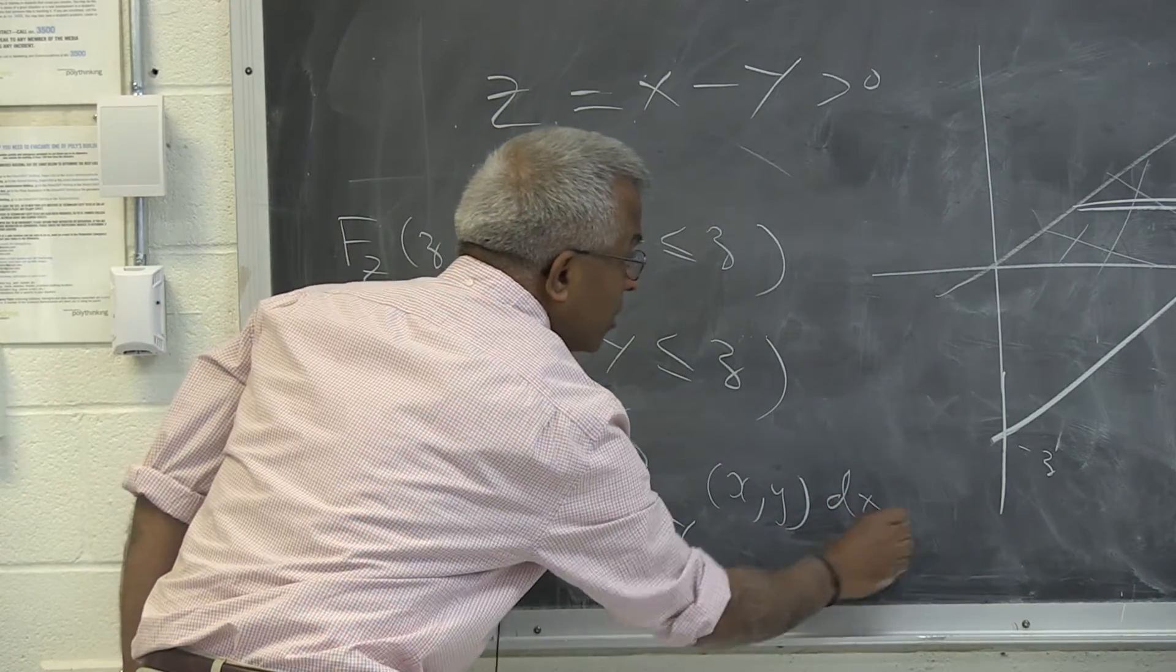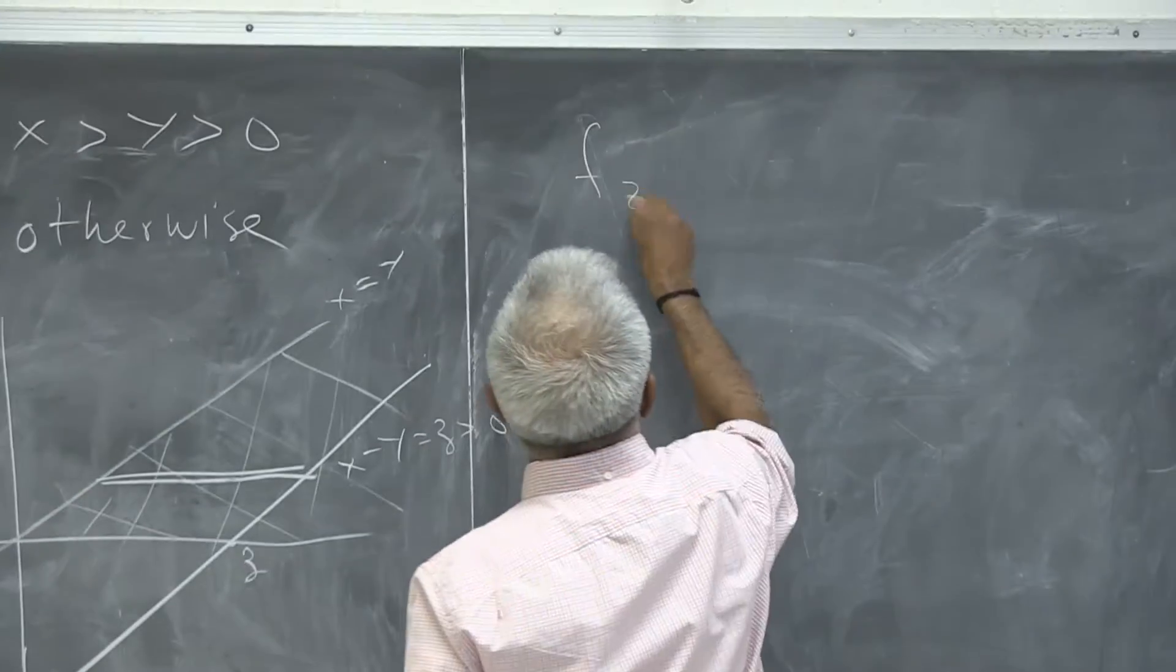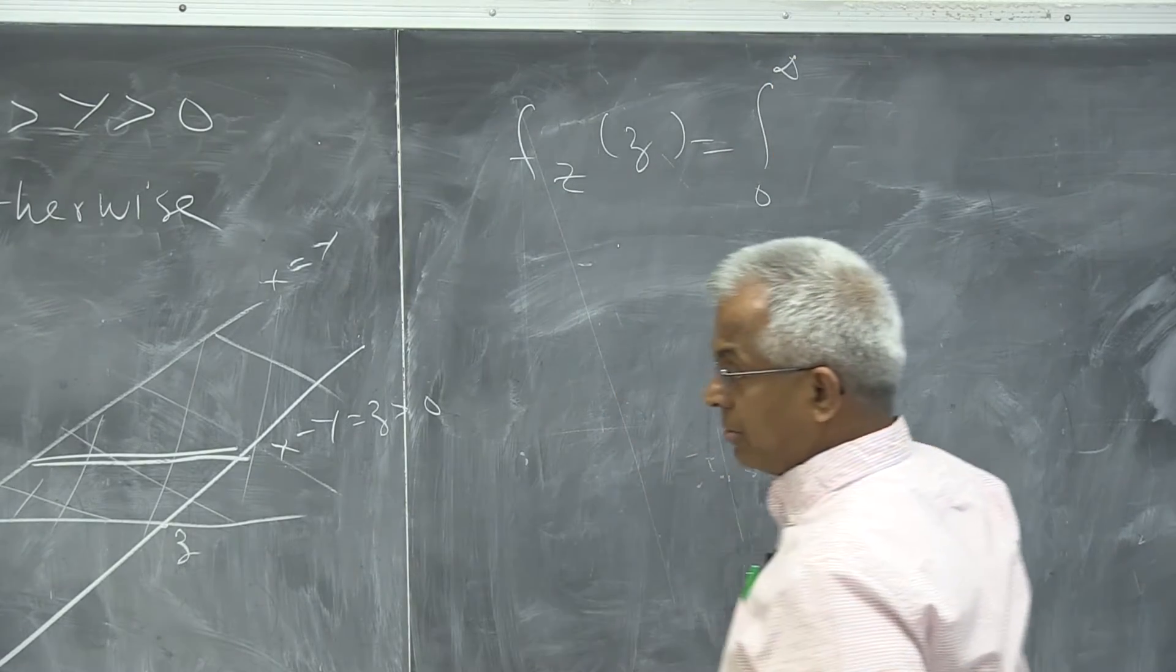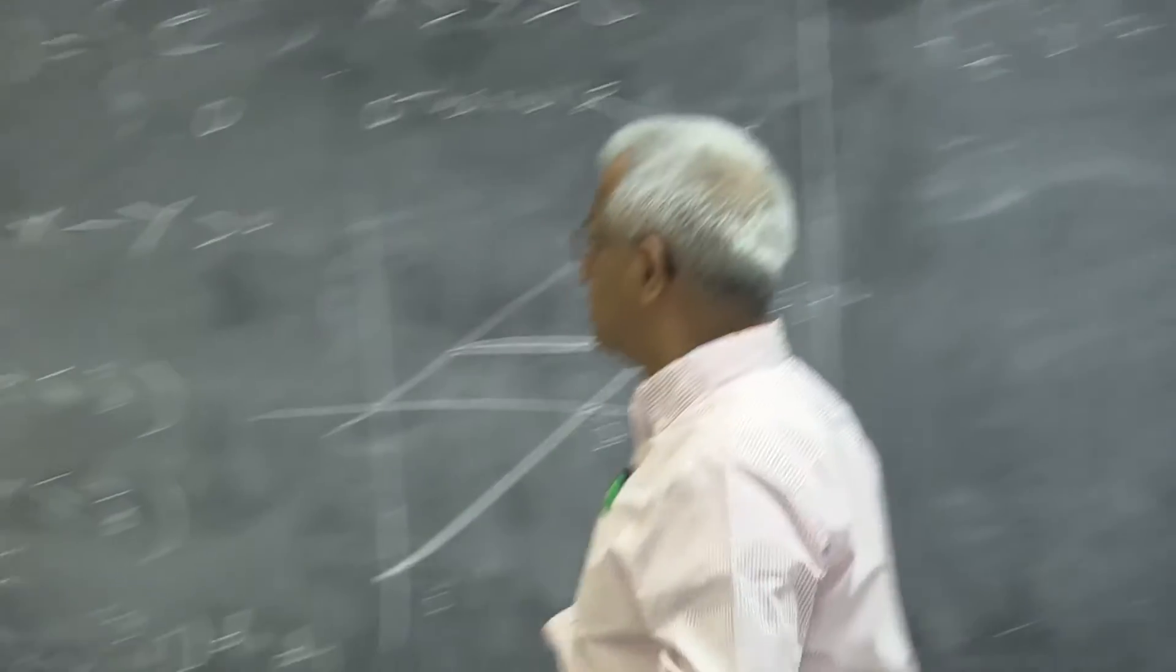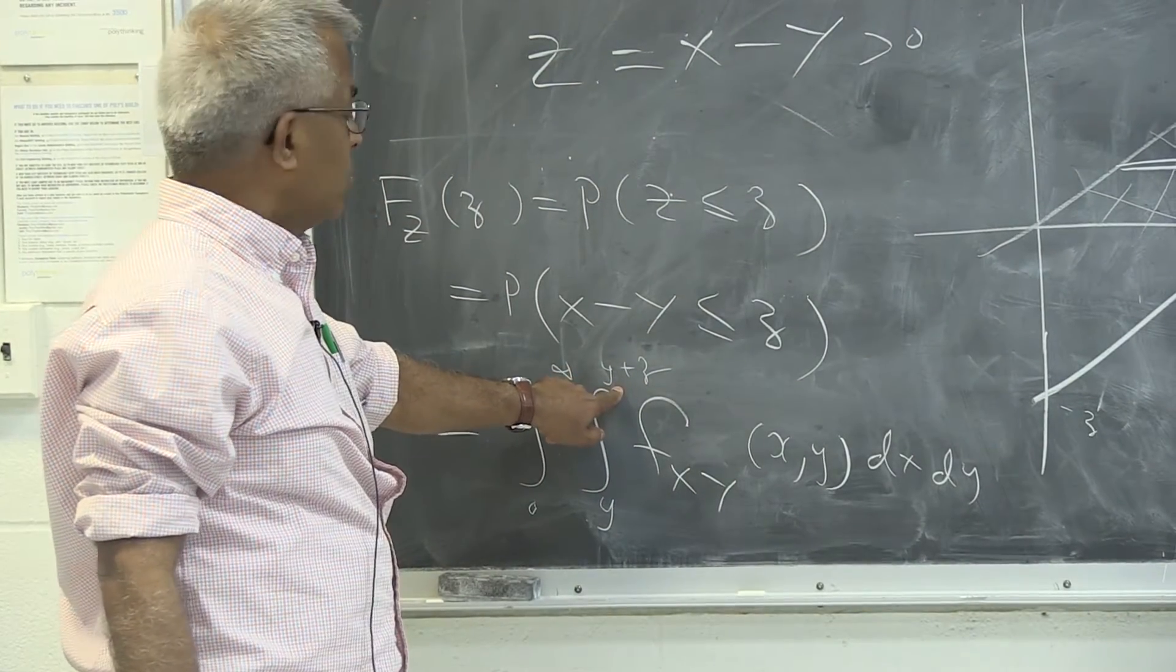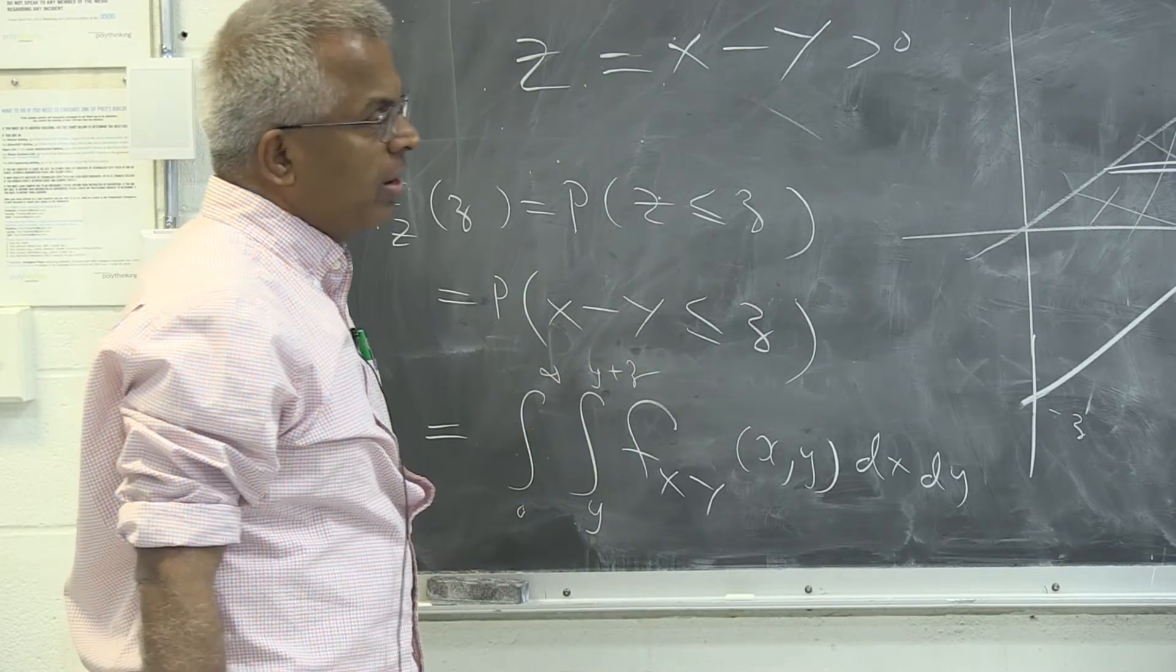dx dy. If that is correct, then f_z is going to be integral 0 to infinity. Let's do the limits here. The derivative here. Derivative is 1, right?